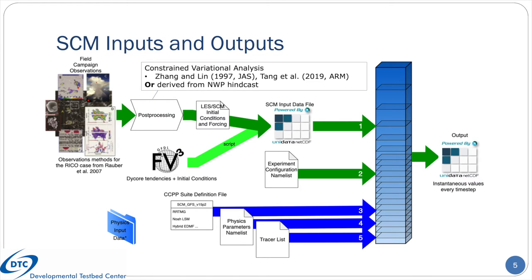In order to run the SCM model, one needs to configure both the case to run and the physics. This diagram shows how that is done through a total of five external files. The green arrows represent the case configuration and the blue arrows represent the physics configuration. The first file that is needed is the case input data file. It contains the initial conditions and forcing, which can be derived in a couple of different ways.